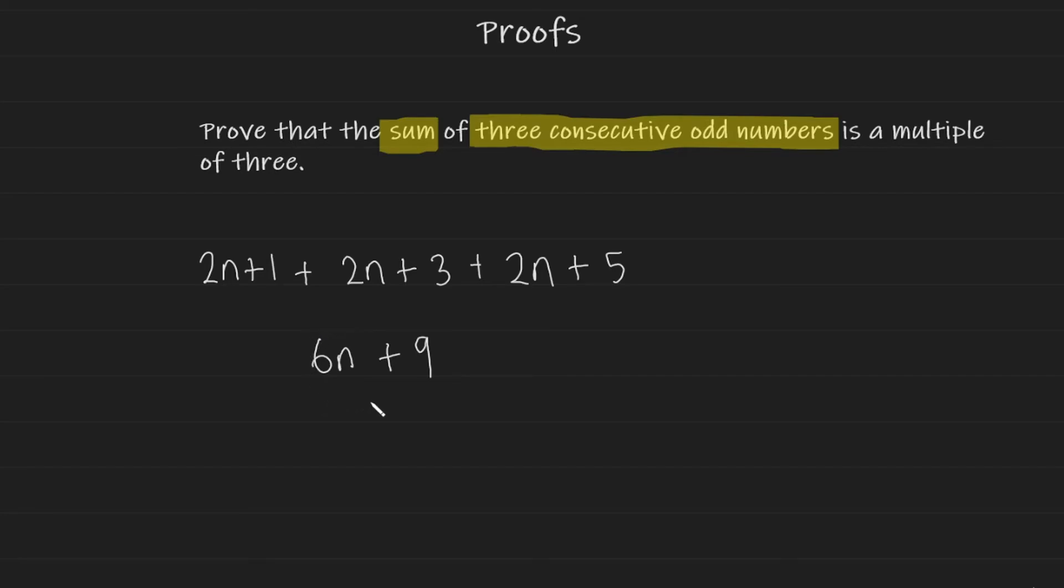Now, how can I show that this is a multiple of 3? How can you show that anything is a multiple of 3? For anything to be a multiple of 3, you have to show that 3 is being multiplied to that value, or in this case, this expression. And how can I show that? Well, I'm going to factorize a 3 from this expression. And I end up with 3 times 2n plus 3.